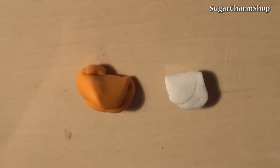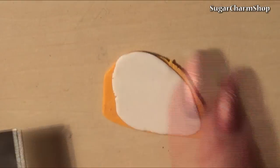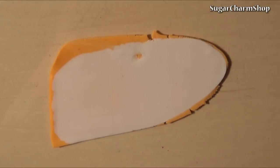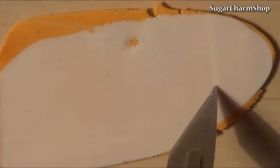For the peel I rolled out a piece of white and opaque orange, then stacked them and rolled it out again. For the texture on the inside I used a needle tool and for the texture on the outside I used sandpaper.